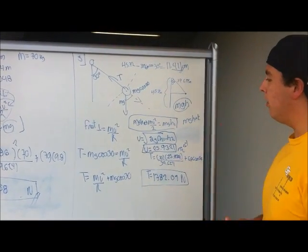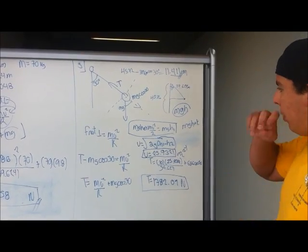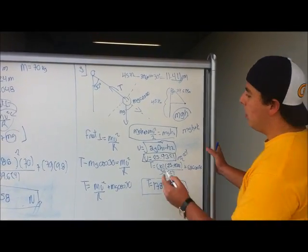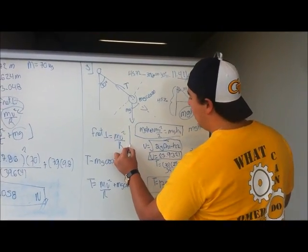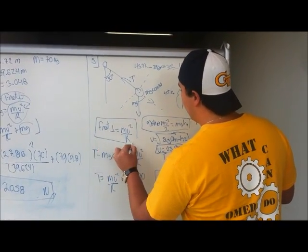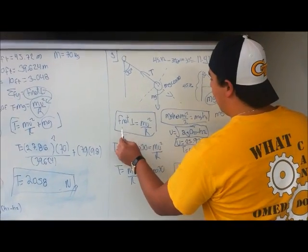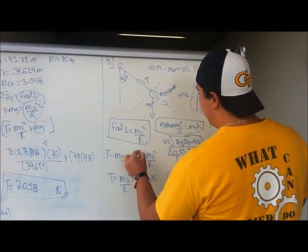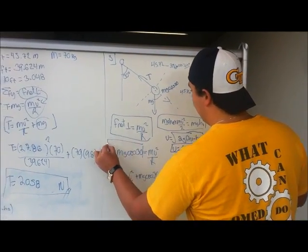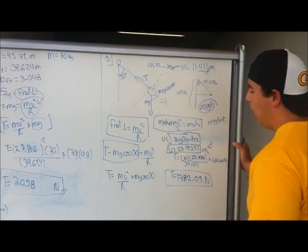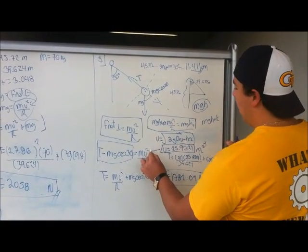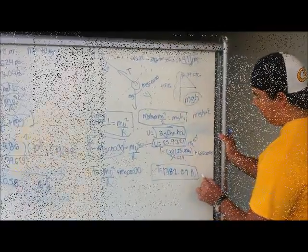So we know, again, from previous formulas, that F net perpendicular, which is the one I'm very interested in, is equal to mv² divided by r. We know that F net perpendicular is going to be the tension minus the force of gravity. After solving it, and you already have the velocity, we can get that the tension is this.